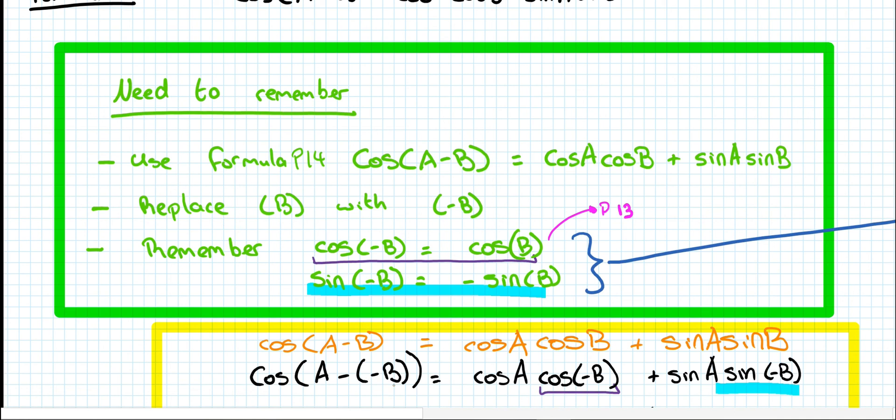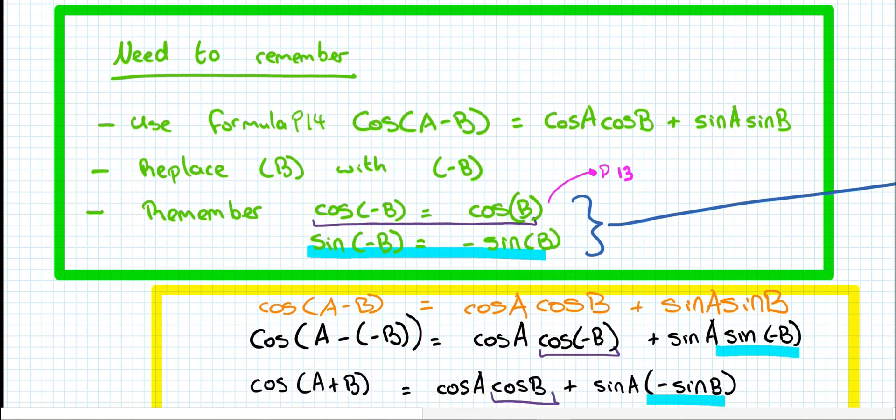we replace B with (-B). And you might notice what's going to happen here on the left-hand side. Minus by minus will be plus. What about the purple box here? Well, from the green box above, I know that cos(-B) is equal to cos(B). And here, that will end up being -sin(B).